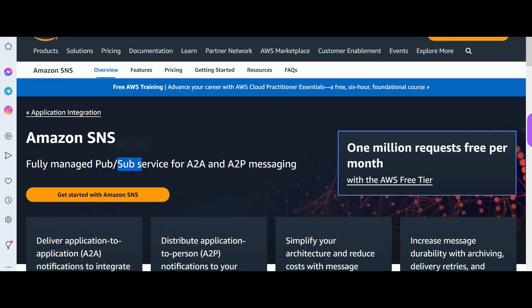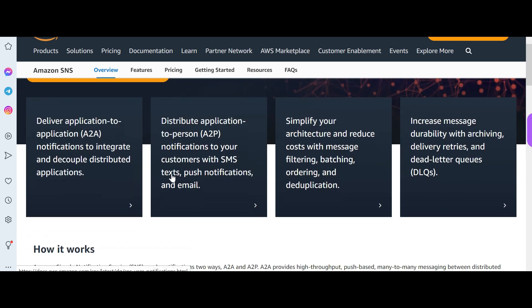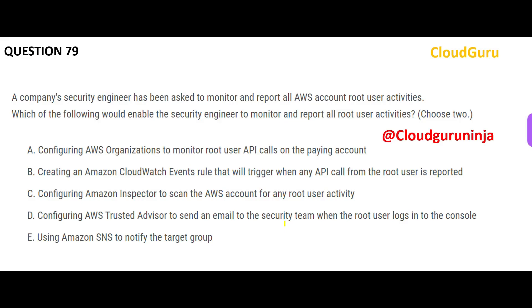Whenever you get such questions, you have to use a rule and send a notification. For notifications, SNS is the pub-sub service that can be used to send text, push notifications, and emails. So the moment I see SNS, that is one of my answers. And the rule we need is a CloudWatch Events rule — that is my second answer.